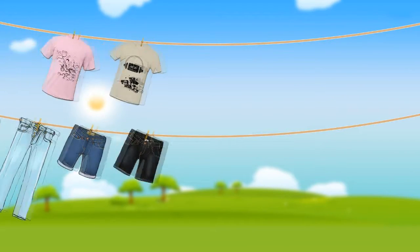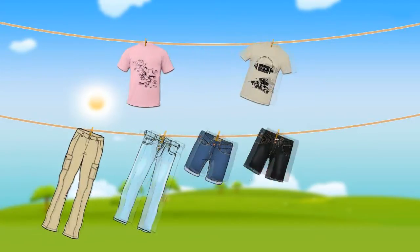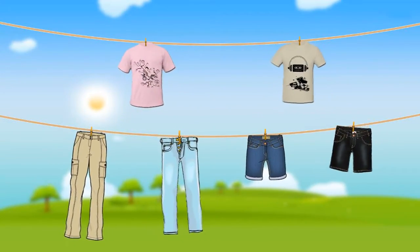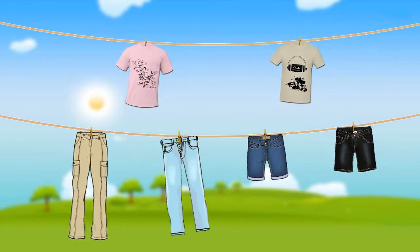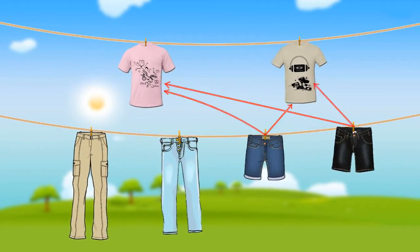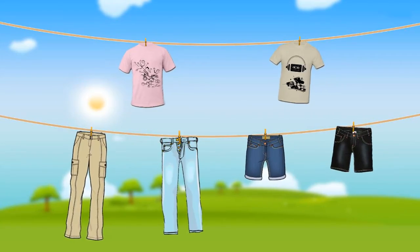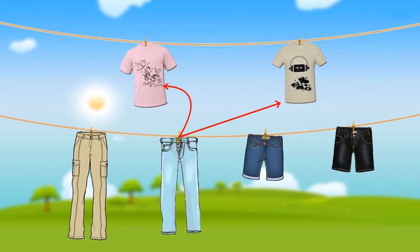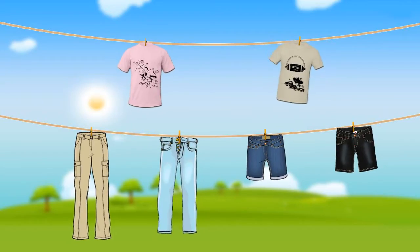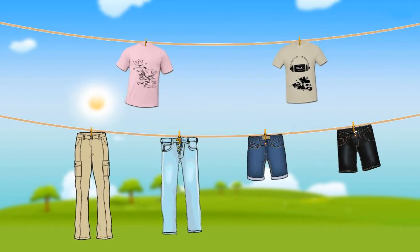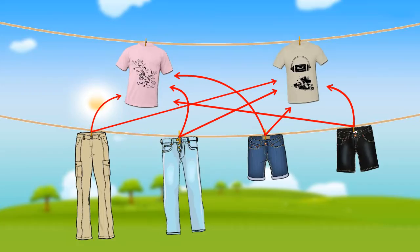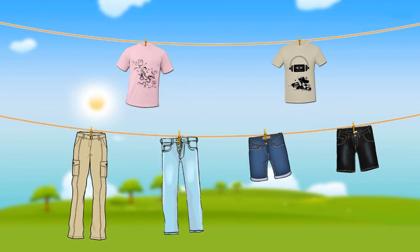How about in this illustration? How many shirts are there? There are two. How many pairs of short pants are there? There are four. How many pairs of long pants are there? There are four also. And how many different outfits can you choose? There are eight different outfits that you can choose.